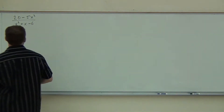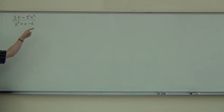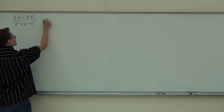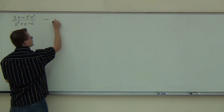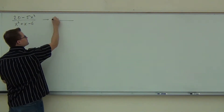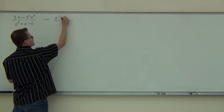Let's look at the numerator here. Can you tell me what factors out of 20 minus 5x squared? We're not just going to take the 5 — we're going to take the negative 5. Watch carefully. If we factor out 5, we're going to get 4 minus x squared.